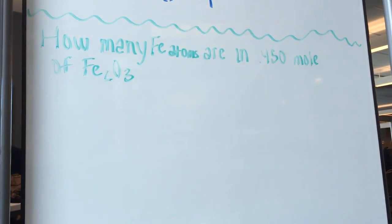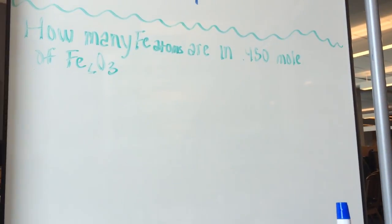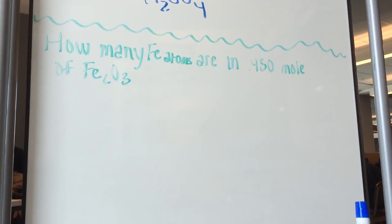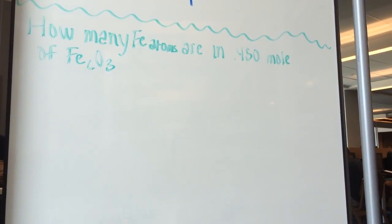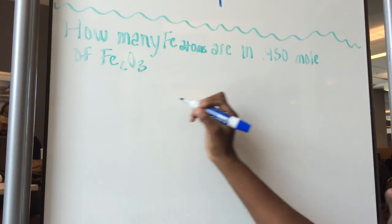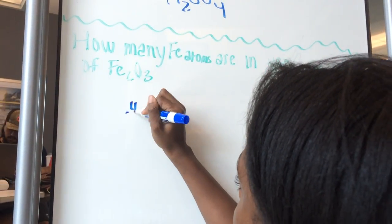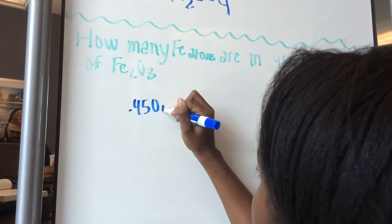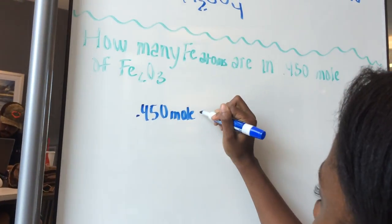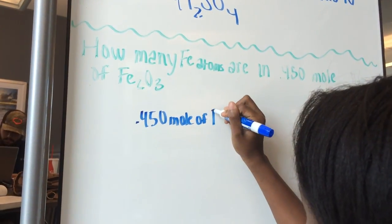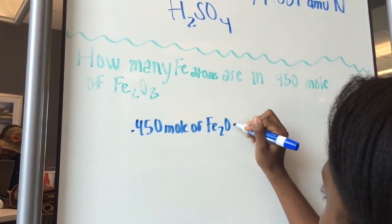Okay, so our last problem we're going to do is how many Fe atoms are in 0.450 moles of Fe2O3. So let's first write out what we're given. We're given 0.450 moles of Fe2O3.